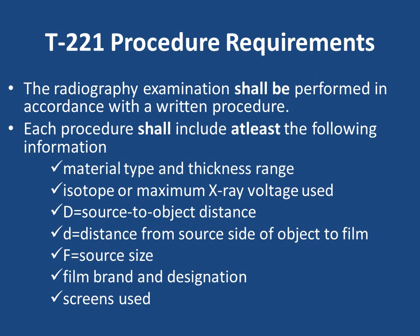The material type may be steel, alloys, castings, etc. Thickness ranges of the materials to be radiographed are to be mentioned in the procedure. The isotope may be Iridium-192, Selenium-75, or Cobalt-60. X-ray voltage used will be according to material thickness.